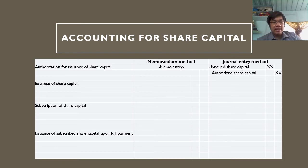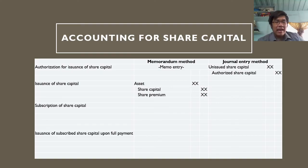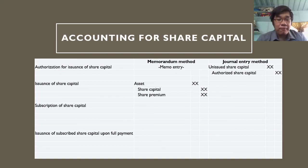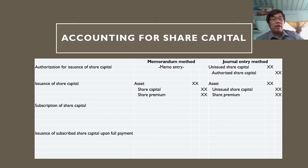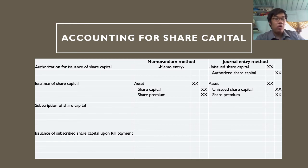The second transaction is issuance — when the share certificate is given to the shareholder. Under the memorandum method, the entry is: debit asset (cash or non-cash), credit share capital at par or stated value, and credit share premium for any excess. Under the journal entry method, the entry is: debit asset (cash or non-cash), credit unissued share capital — reducing it — and credit share premium for any excess over par or stated value.